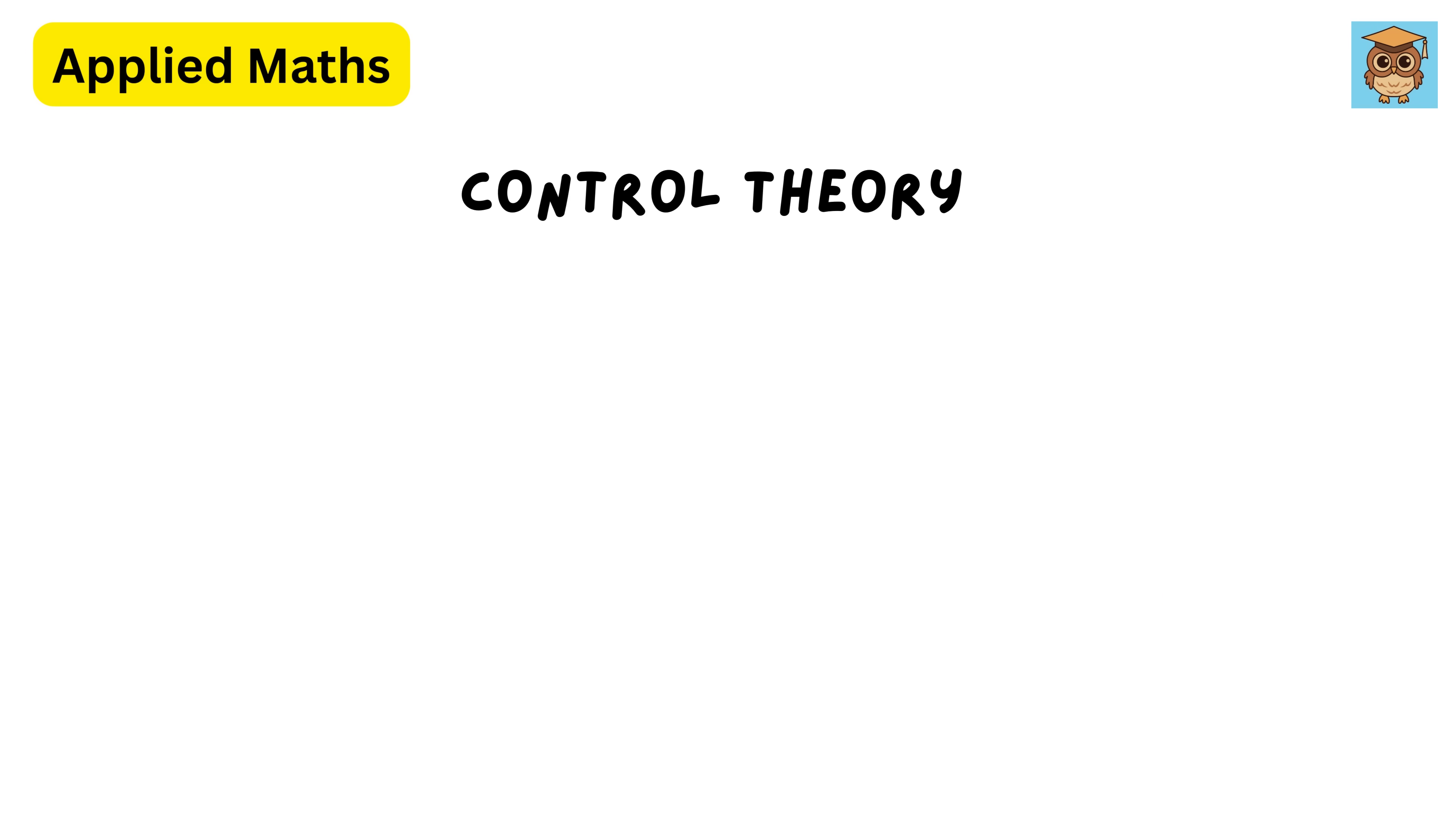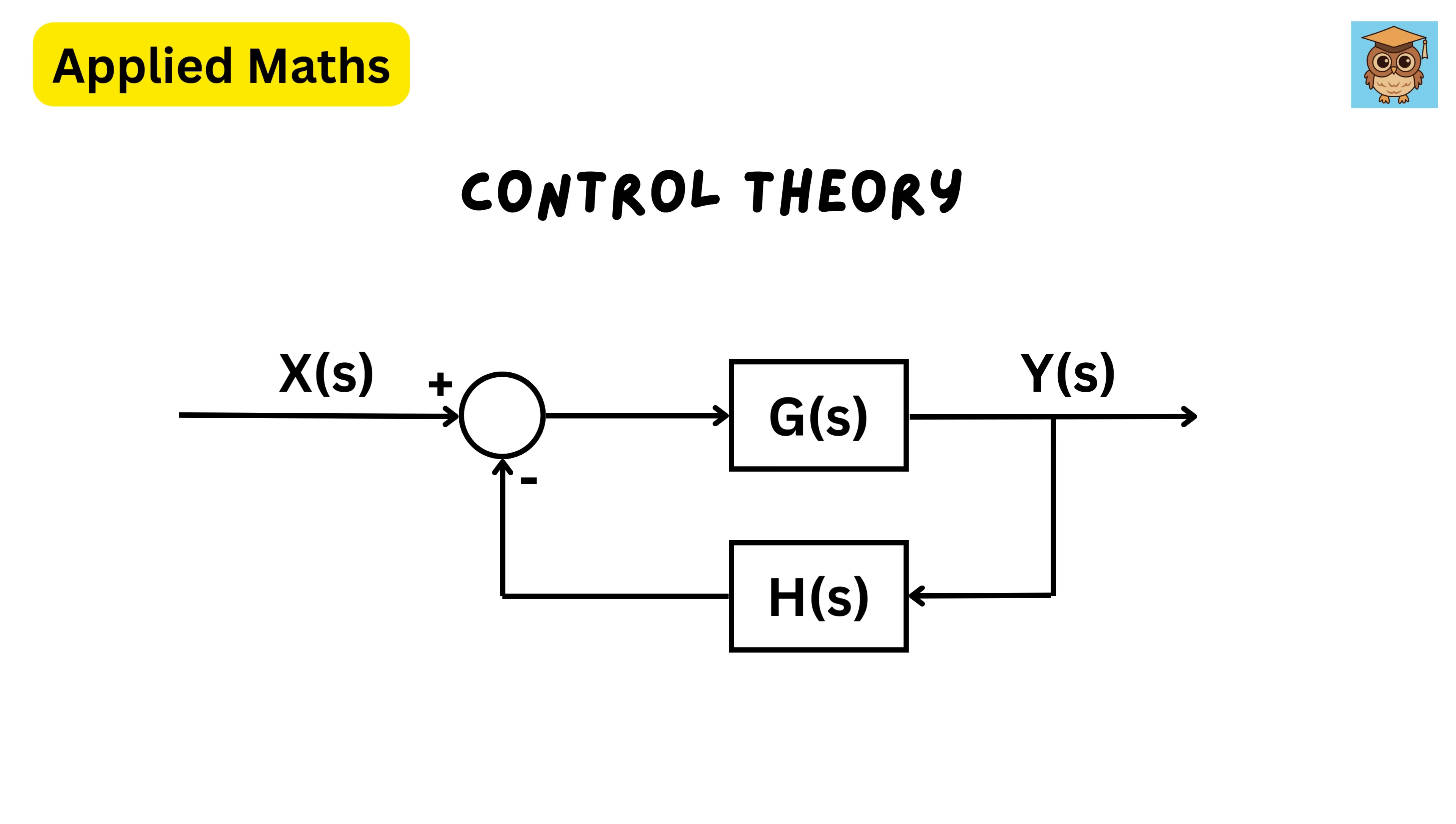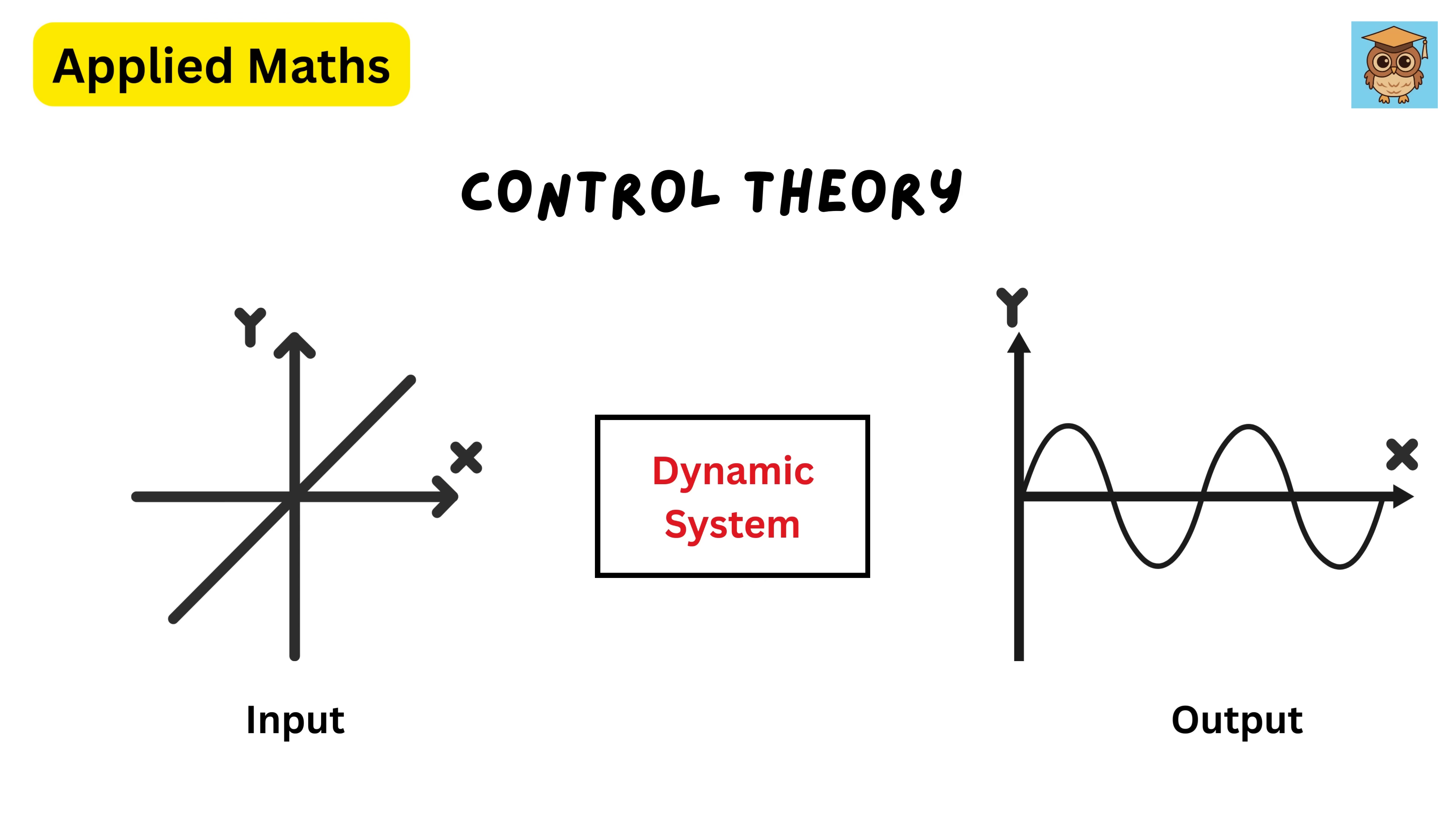Then we have control theory. Control theory focuses on regulating systems to achieve desired outcomes by automatically adjusting inputs based on feedback. It ensures stability, efficiency, and precision in dynamic systems.